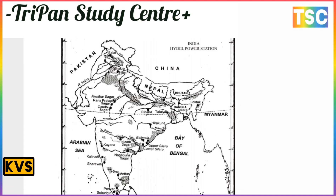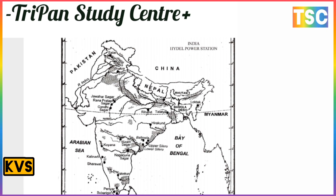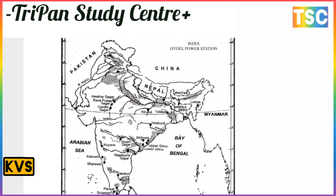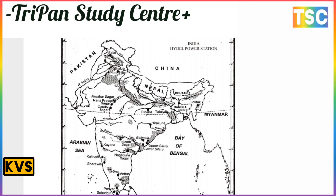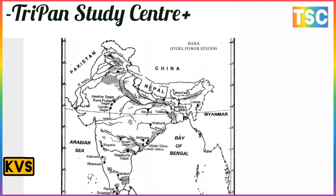This map shows the hydro power stations in India on your screen. The major stations include Bhakra, Satluj, Silas, Chuna, Nagar Rana, Pratap Sagar, Gandhi Nagar, Quenone, Skalyamdi, and Baravatis.